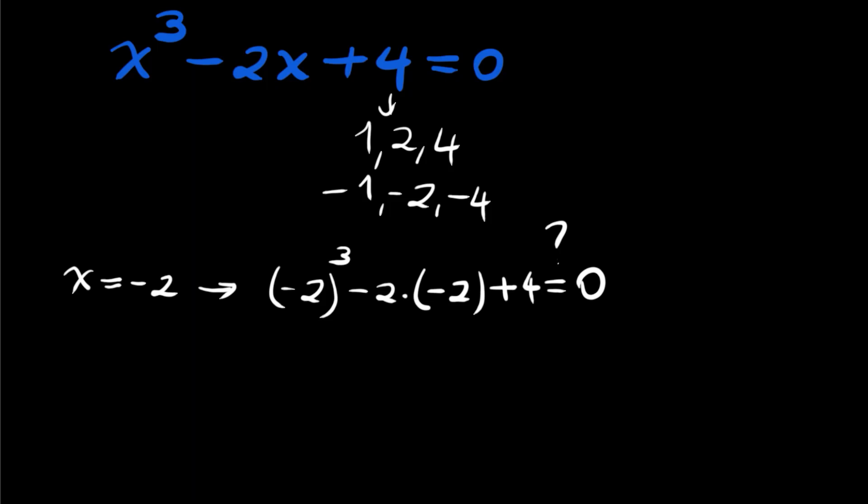We are checking: this is -8, this is +4, and again +4. This is 0 = 0. So x = -2 is our real root. You can try the other ones, but x = -2 is our first root.